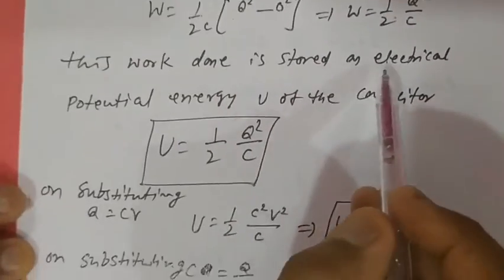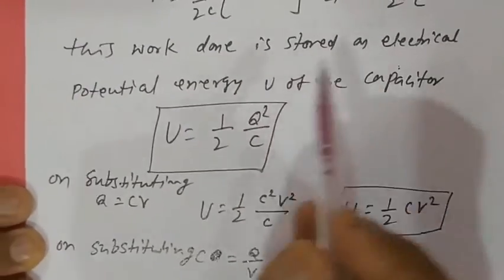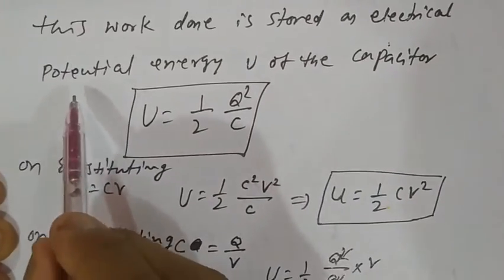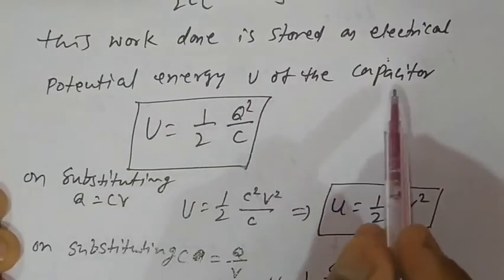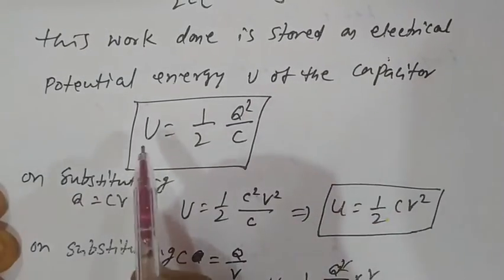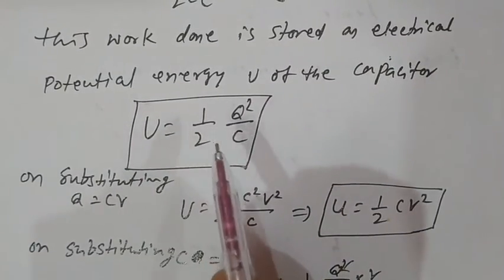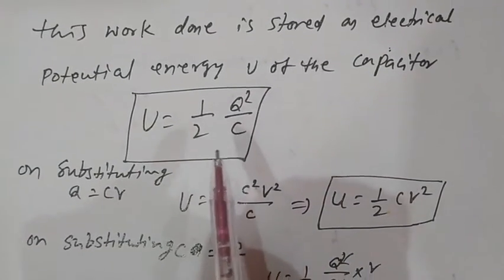This work done is stored as electrical potential energy U of the capacitor. So U equal to 1/2 × Q² / C.